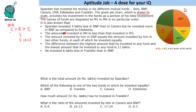We are left with the remaining values. We have a relation for Franklin — let Franklin = f. Then BNP = f + 6 and Canara = f + 9 (three more added). Let us assume this sector is Franklin, so this value = f. The DSP equals two equal parts, so those two equal sectors are also f each. And BNP = f + 6, Canara = f + 9.